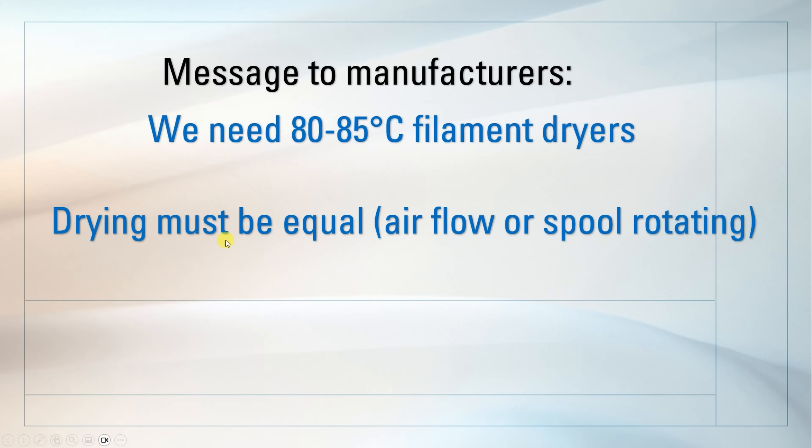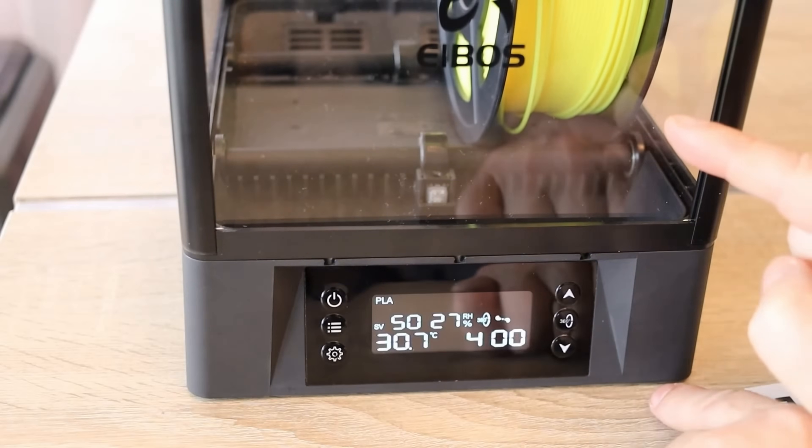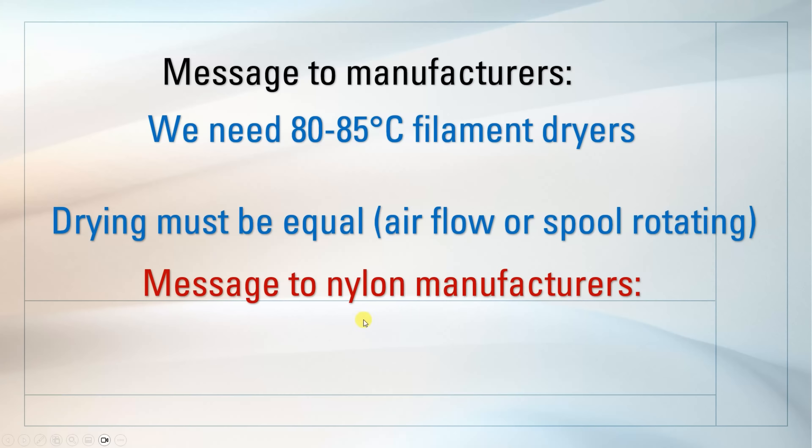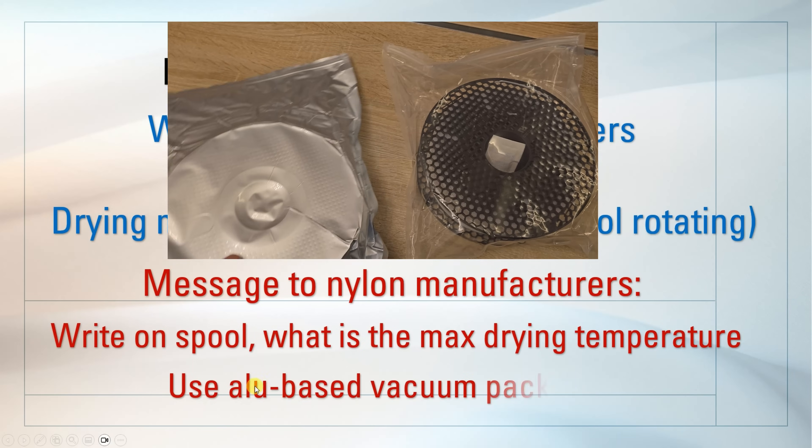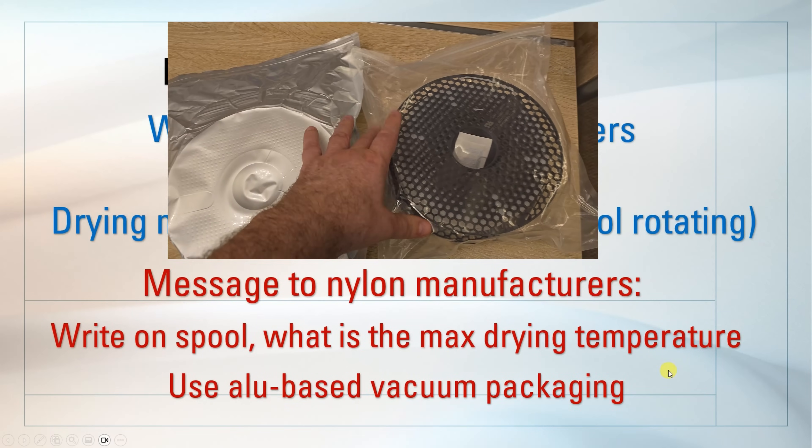And also, drying must be equal. For example, by air flow or maybe spool rotating like we have on Polymaker. Also, I have a message to the nylon manufacturers. It's important to write on the spool what is the maximum drying temperature. Because if we will start to getting this kind of filament dryers, it will be good to know what is the maximum drying temperature. And also, use aluminum-based vacuum packaging. It is much better than just regular foil.